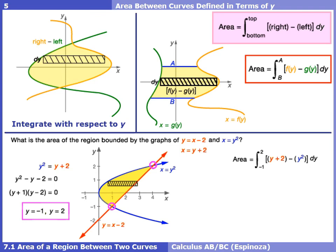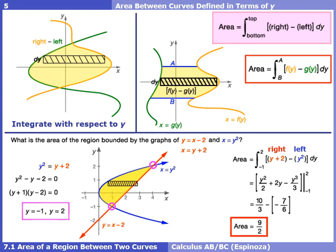We integrate from −1 to 2. The right function is the red line y + 2, and the left function is the blue parabola y². Subtract: (y + 2) − y². Integrating gives y²/2 + 2y − y³/3, evaluated from −1 to 2. Plugging in 2 gives 10/3; plugging in −1 gives −7/6. Subtracting those two values gives an area of 9/2.